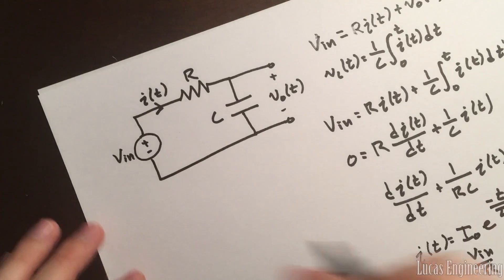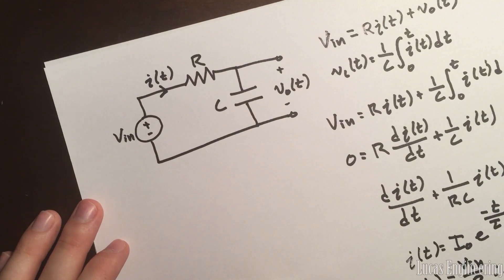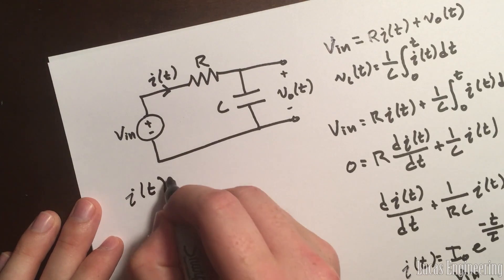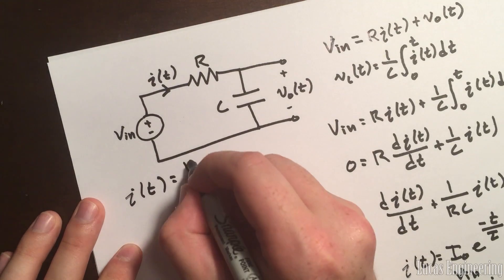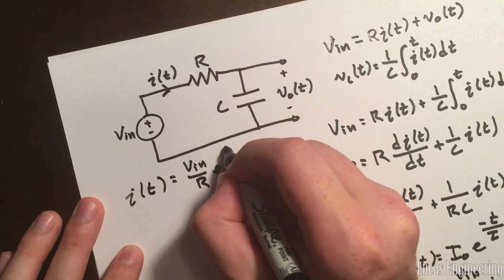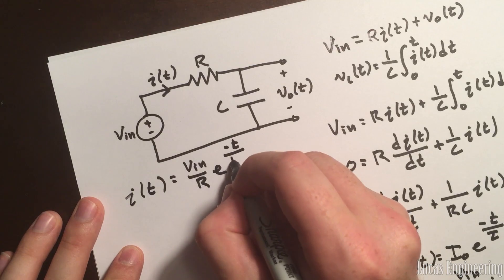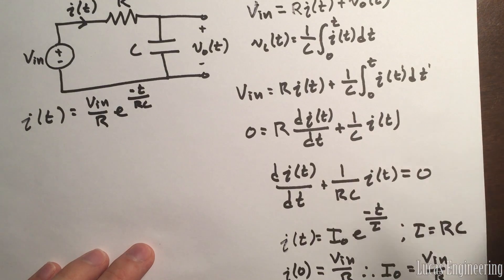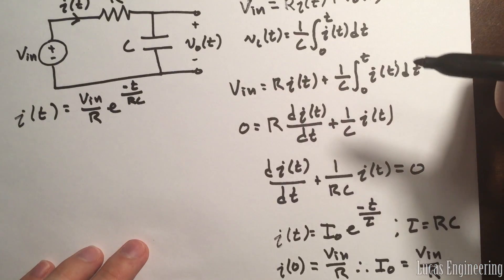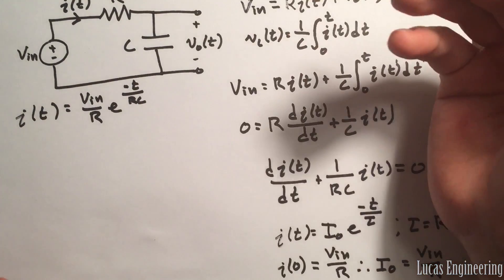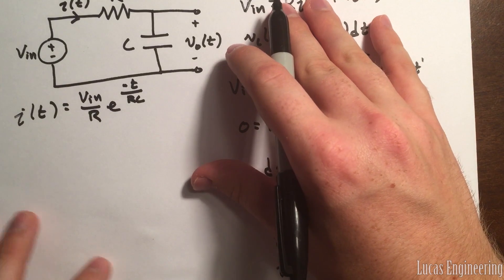Plugging I₀ back in, we have: I(T) = (V_n / R)·e^(-T/RC). Most professors keep this in terms of τ, but I'll write it out in terms of R and C so we have everything in terms of voltage, resistance, capacitance, and time.